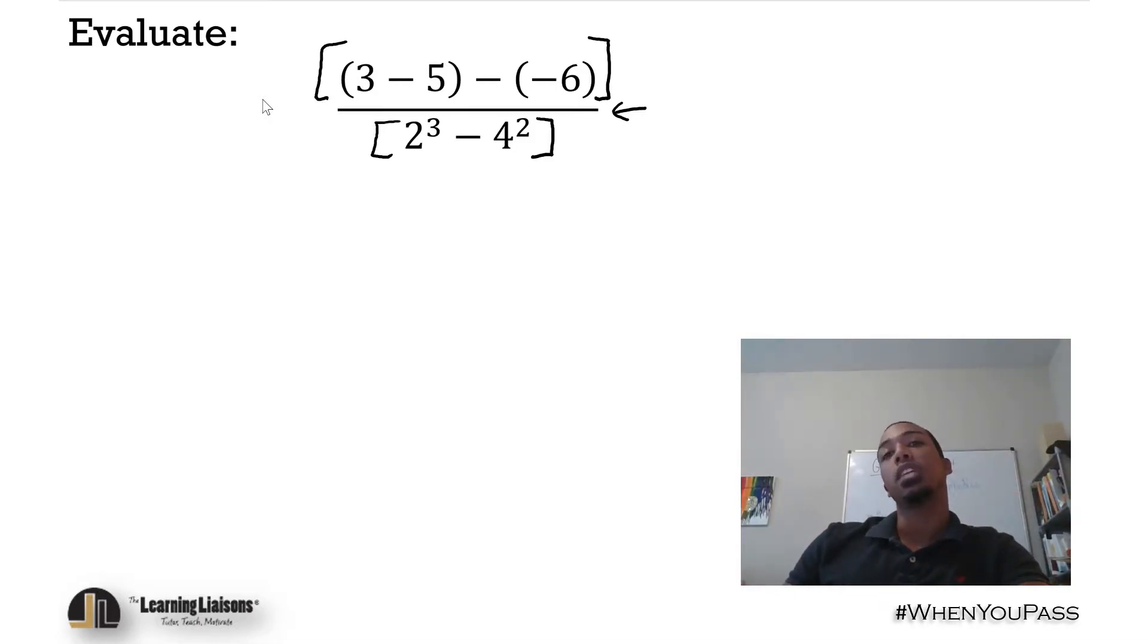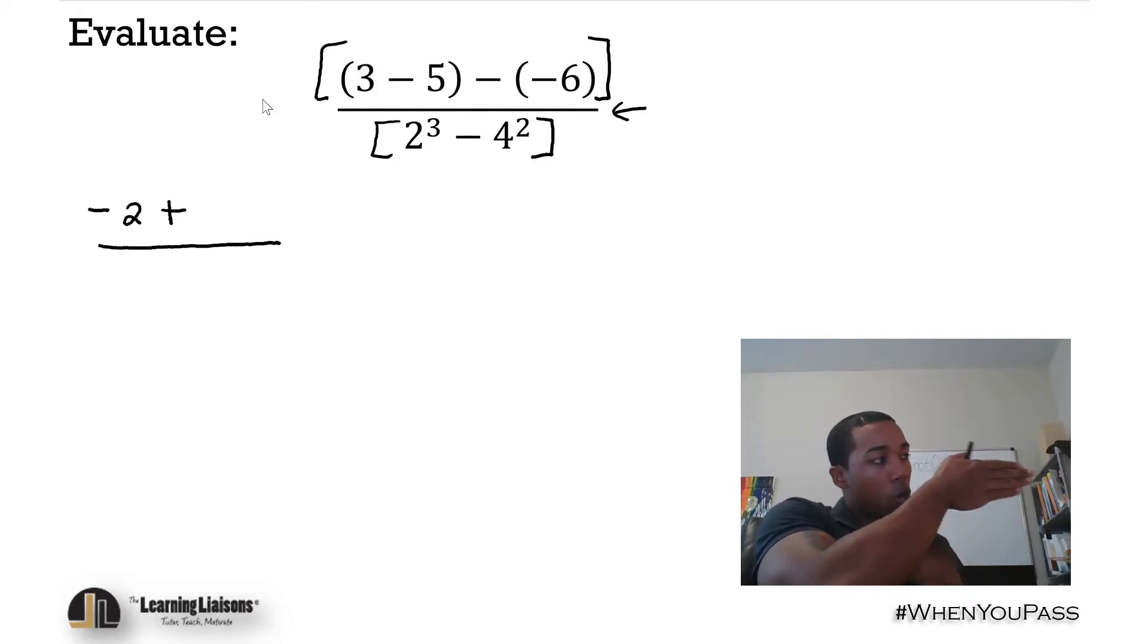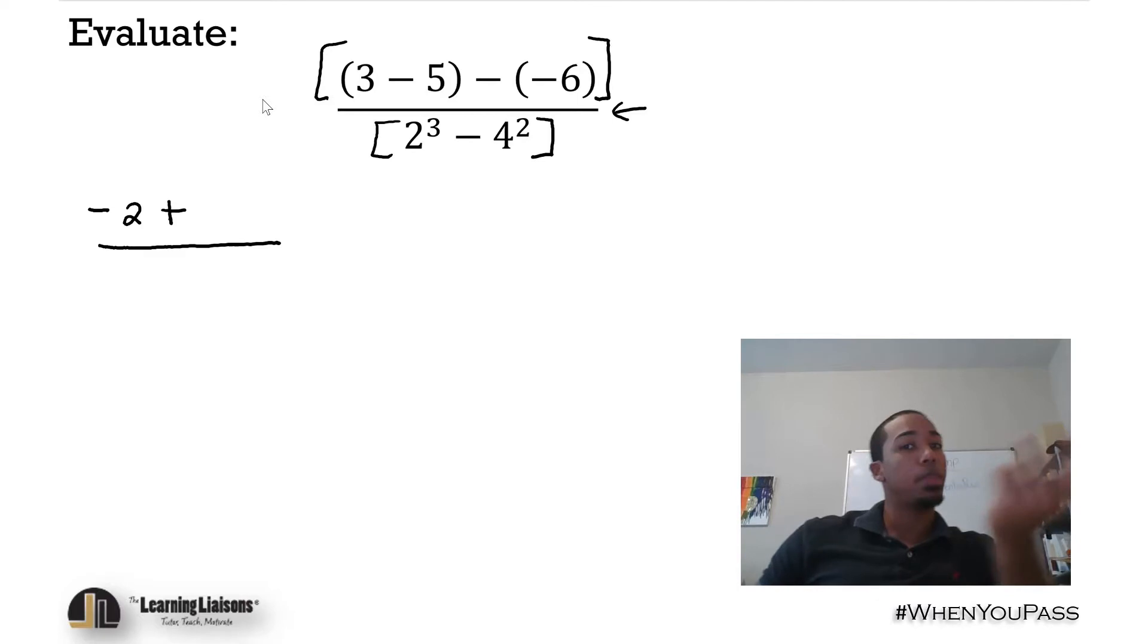Let's take care of the top here. What's 3 minus 5? That would be negative 2, because 5 minus 3 is 2, so 3 minus 5 would be negative 2. Then minus negative 6. If you're subtracting a negative, that's just like saying positive. If I say go back and go back, technically I'm going forward. Negative negative becomes a positive.